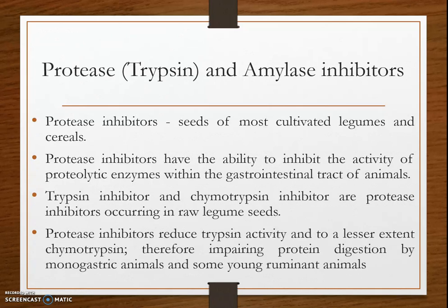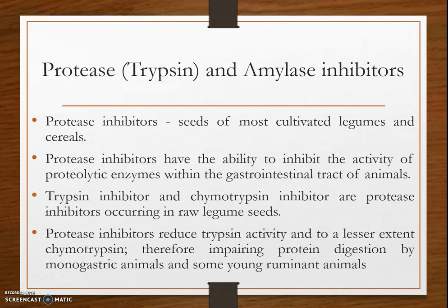The first category is protease inhibitors, especially trypsin and amylase inhibitors. Protease inhibitors inhibit the activity of the enzyme protease. These protease inhibitors are mostly found in seeds of cultivated legumes and cereals, and they have the ability to inhibit the activity of proteolytic enzymes within the gastrointestinal tract of animals. Trypsin inhibitor and chymotrypsin inhibitor are also protease inhibitors occurring in raw legume seeds.